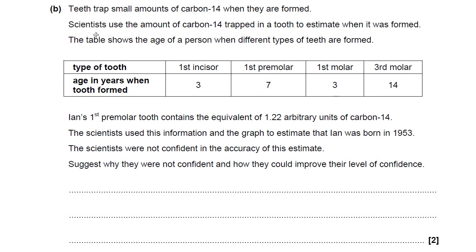Nothing so far about actual radioactive dating with carbon-14. Teeth trap small amounts of carbon-14 when they're formed — when they're formed is the important part. Scientists use the amount of carbon-14 trapped to estimate when the tooth was formed. This table shows the age of a person when different types of teeth form: first incisor at age three, first premolar at age seven, first molar at age three, third molar at age 14. Ian's first premolar contains the equivalent of 1.22 arbitrary units of carbon-14. Scientists used this and the graph to estimate that Ian was born in 1953.